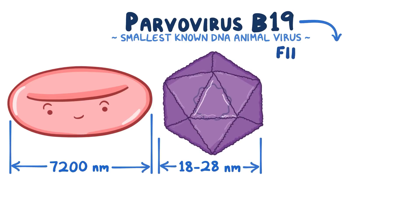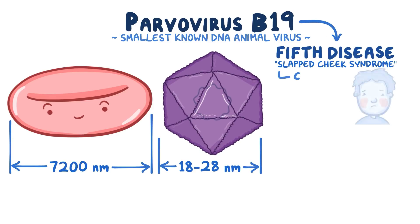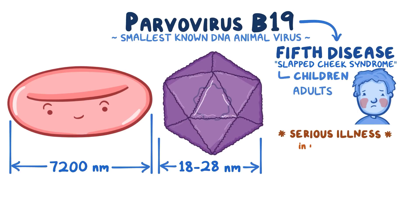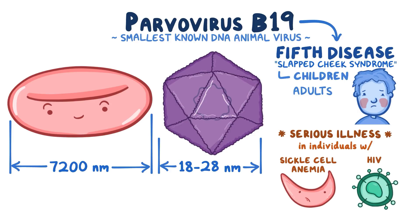While it's mostly known for causing 5th disease, or slapped-cheek syndrome, in children, parvovirus B19 can also affect adults and it can cause serious illness in individuals with pre-existing conditions like sickle cell anemia and HIV.